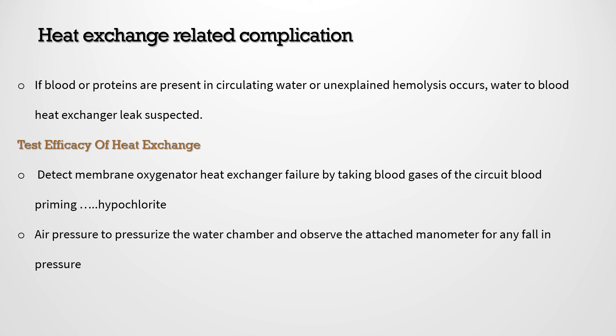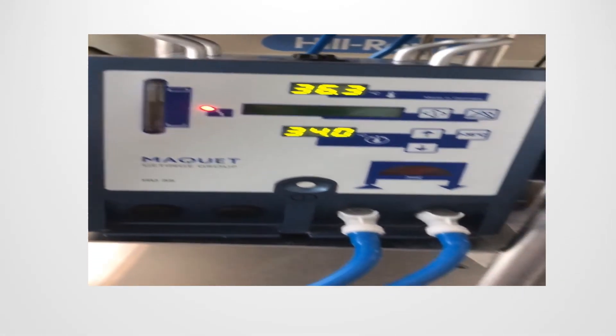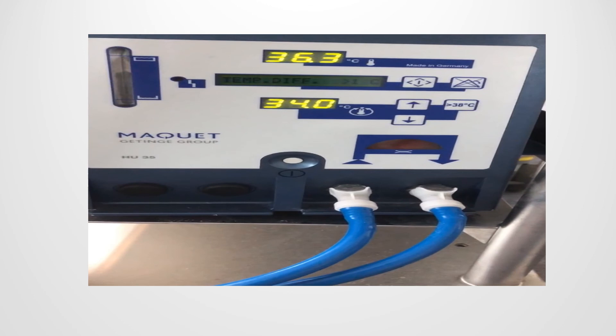Another circuit-related complication is heat exchanger failure. Suspect this in two conditions: if blood or protein is present in the circulating water, or if there is unexplained hemolysis suggesting a water-to-blood heat exchanger leak. To test heat exchanger efficacy, take a blood gas of the circuit blood during priming — hypochlorite may be detected. Also observe the attached manometer inside the pressurized water chamber for any fall in pressure. The heat exchanger alarm should detect a difference in temperature between the machine side and the patient side; both should be adjusted to be equal.